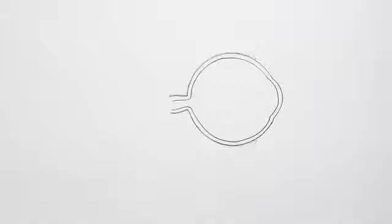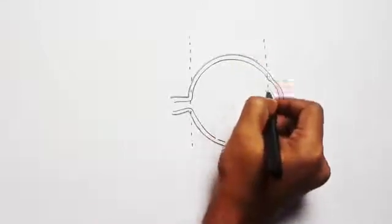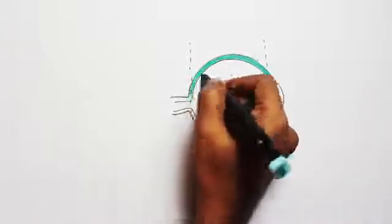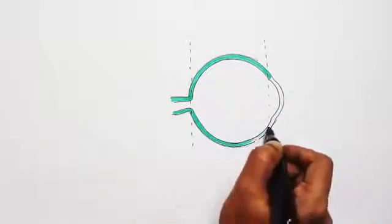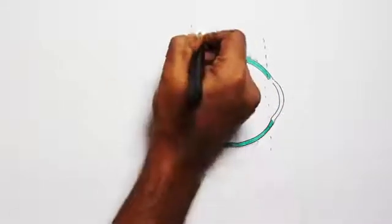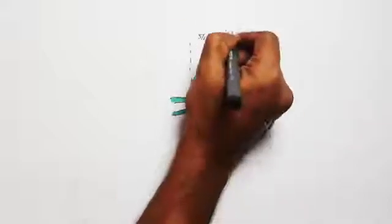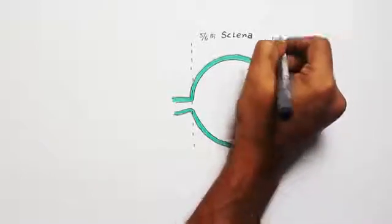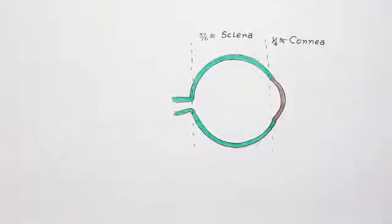Here in this diagram, this total part is the outer layer. The posterior five-sixths part, all this layer, is called sclera, which is a very tough membrane. This transparent anterior one-sixth part is called cornea. So the outermost layer consists of two parts, sclera and cornea, which protects the inner layers and lets the light come into the eyeball.